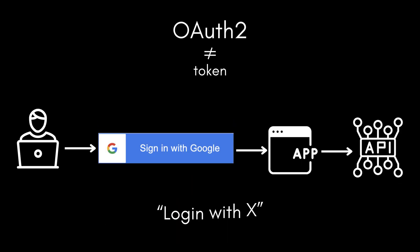Now let's get into OAuth2. OAuth2 is not a token — it's a protocol, a framework that defines how applications can delegate authentication. For example, you want to log in to a new app using your Google account. You click Sign in with Google. Then Google authenticates you and issues a token to the app. This way, the app never sees your Google password; it just gets a secure confirmation from Google that you are you. OAuth2 is the foundation of most modern 'login with X' flows, like Google, GitHub, Facebook, and so on.